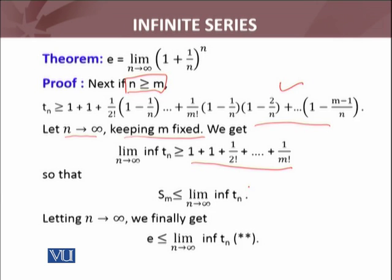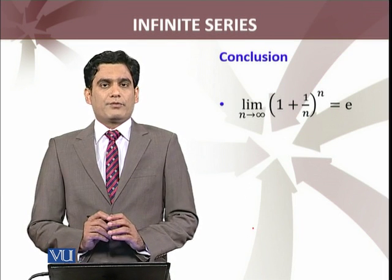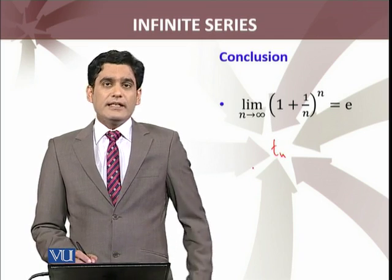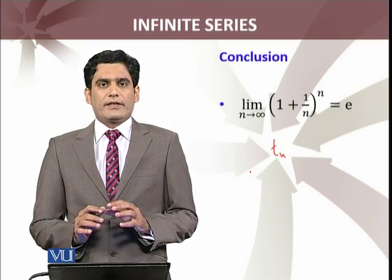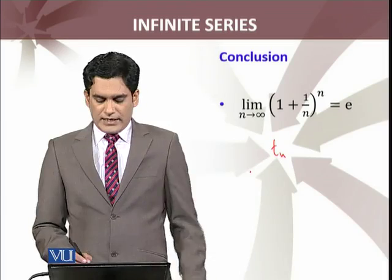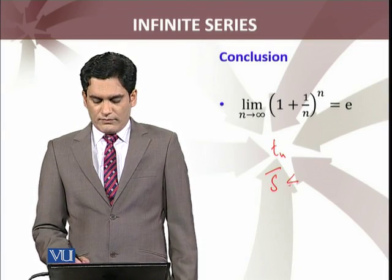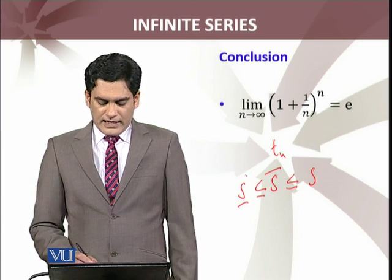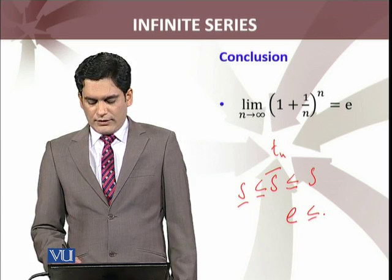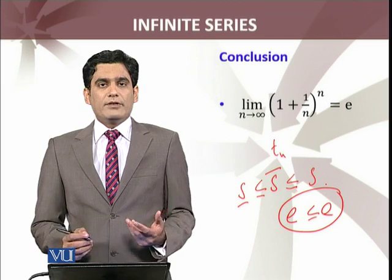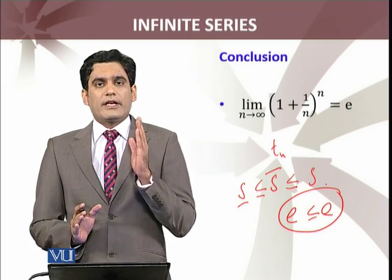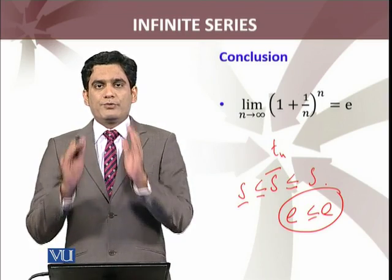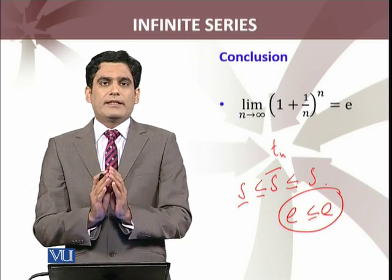From both results we can conclude that the limit of the sequence (1 + 1/n)^n equals e. The limit superior of t_n is less than or equal to e, and e is less than or equal to the limit inferior of t_n. Since limit inferior ≤ limit superior, all quantities equal e, so the limit of the sequence (1 + 1/n)^n equals e — the irrational number we defined earlier. Thus limit as n→∞ of (1 + 1/n)^n = e has been proven, and we can take this as an alternative definition of the irrational number e.